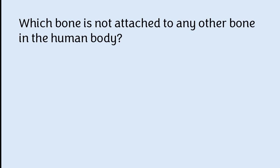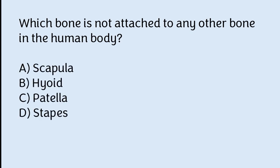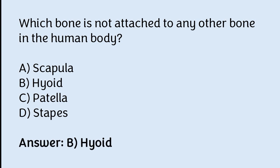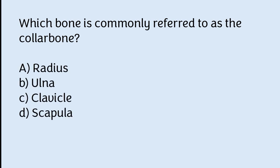Which bone is not attached to any other bone in the human body? Scapula, hyoid, patella, or stapes. The correct answer is option B — the hyoid bone is not attached to any other bone in the human body. Which bone is commonly referred to as the collar bone? Radius, ulna, clavicle, or scapula. The correct answer is option C — the clavicle is commonly referred to as the collar bone.